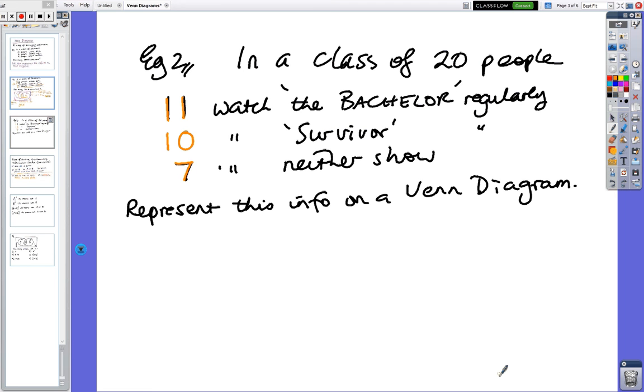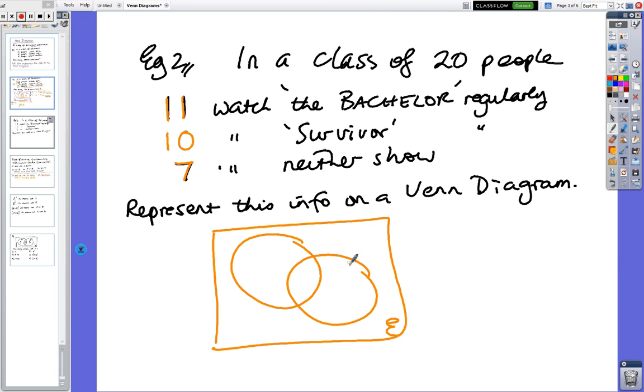Can you have a go at this one yourself? It's the same question with different words. Draw the box and then put the numbers in and then when you're ready, come back live. We start off with the box. We put a little squiggly E, which represents everything that can happen. Bachelor, Survivor. The first thing we do is we go to the people who don't do anything, so that 7 goes outside.